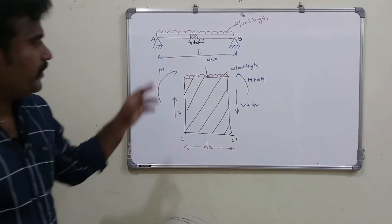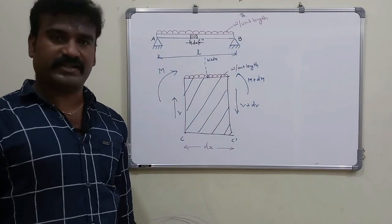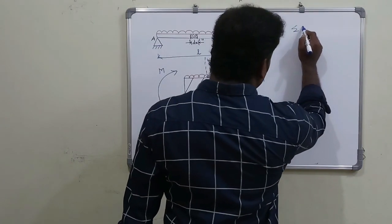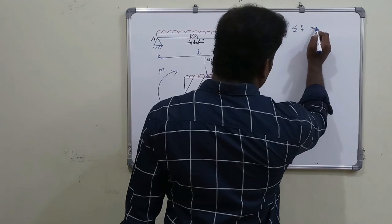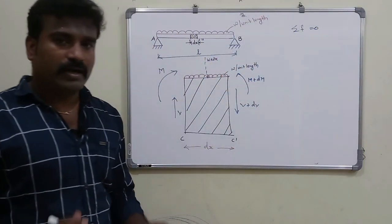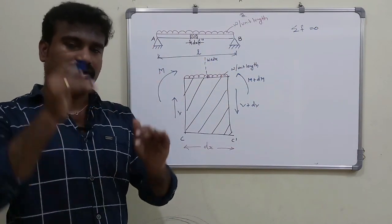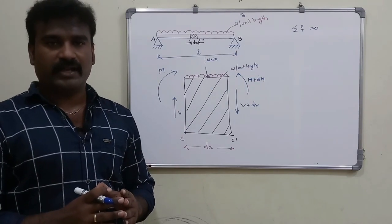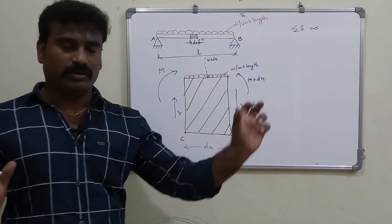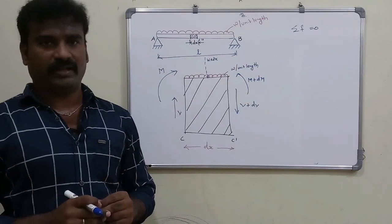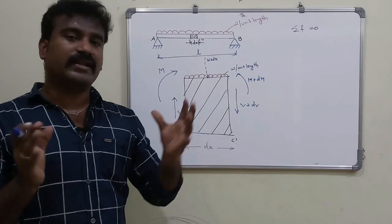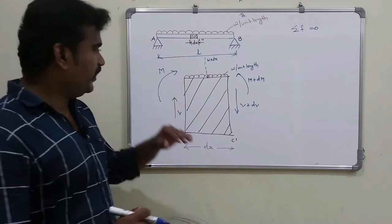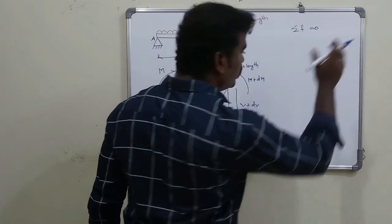I assume the beam is homogeneous. If you know the equilibrium condition, that means the sum of upward forces equals the sum of downward forces — or equivalently, the sum of all forces is equal to zero.